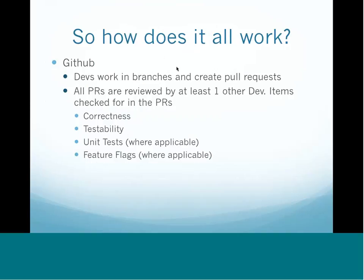So how does it all work? Right now we use GitHub, where all of our code resides. We have separate repositories for the test code and for our application code. Devs work in their branches and create pull requests. All PRs have to be reviewed by at least one other dev. The things we check for in PRs include correctness — things like proper formatting and coding standards — checking for spaces, tabs, and so on. We try to automate that.